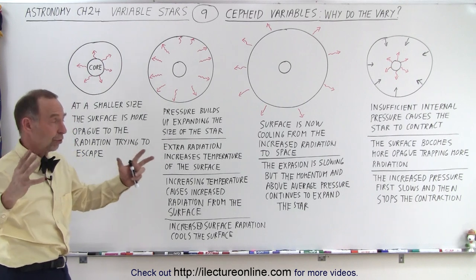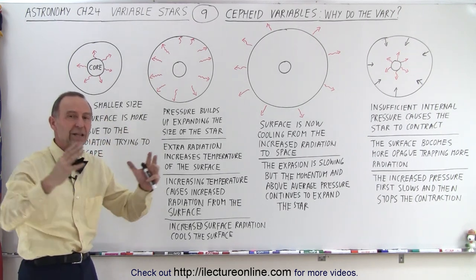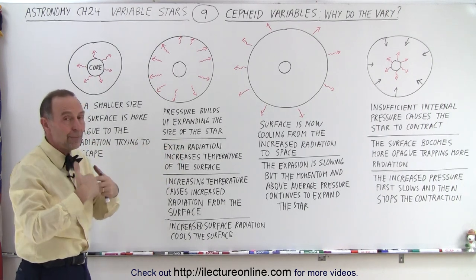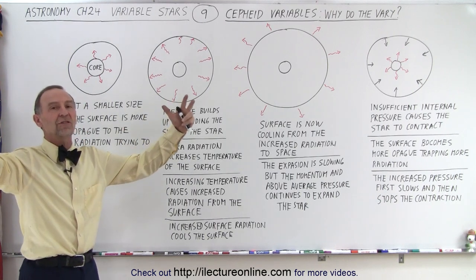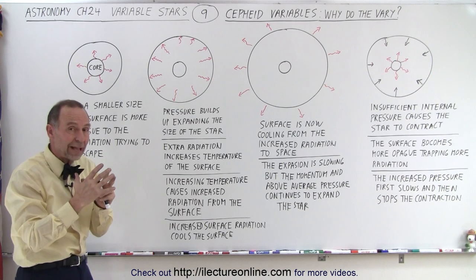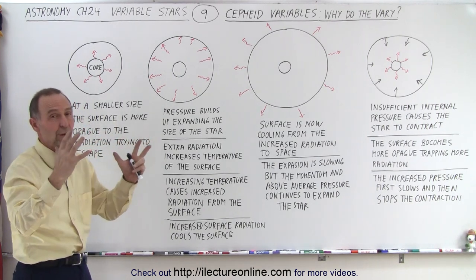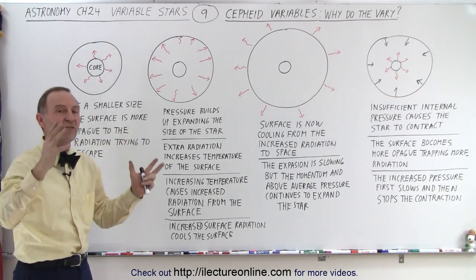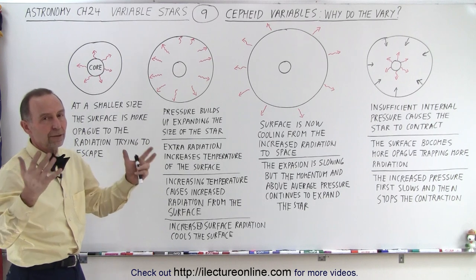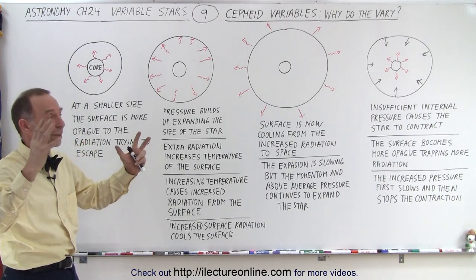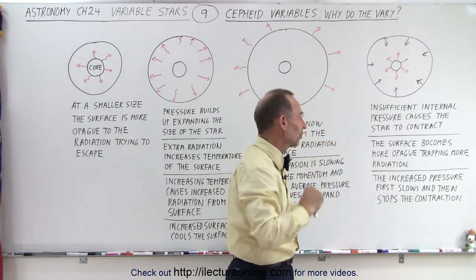Now the extra radiation from the surface begins to cool the star's temperature, and the luminosity begins to decrease. However, the star was at its maximum expansion rate, so both the momentum — with the surface moving at about 20–25 kilometers per second — and the greater-than-average internal pressure continue to expand the star even as surface temperature and radiation are declining. Eventually the additional pressure is gone, momentum stops, and the star begins to collapse.